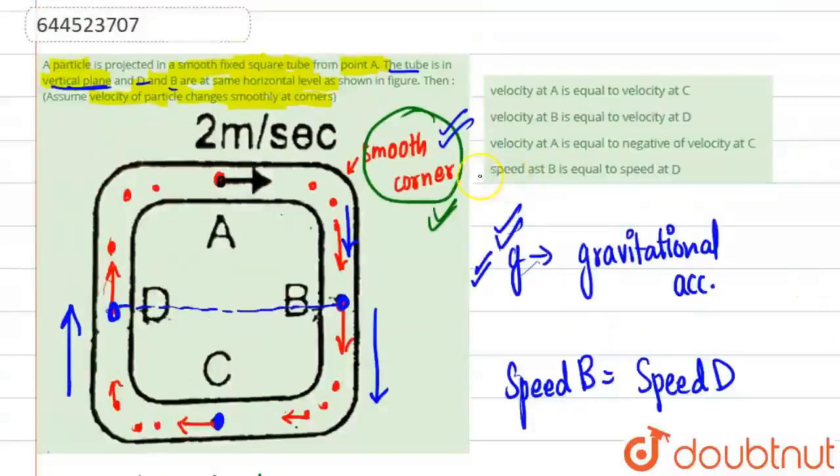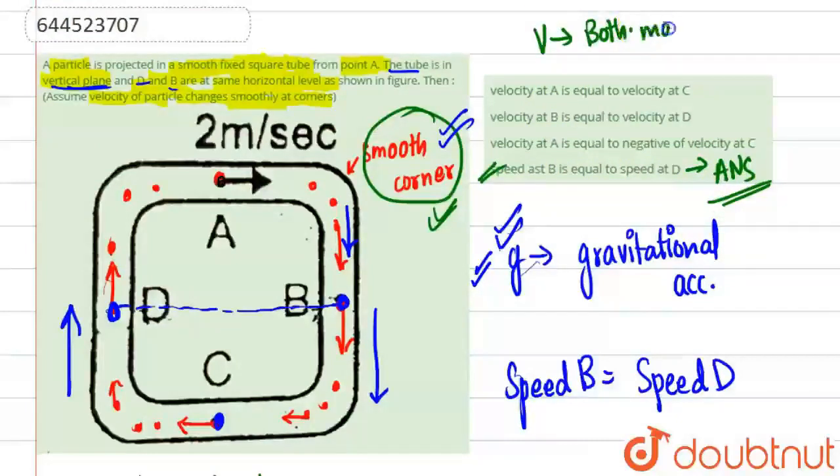So basically our answer will be option number D, that speed at B is equal to speed at D. Got it?